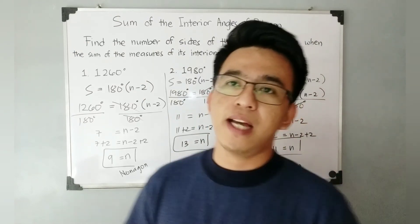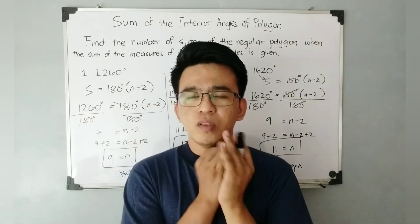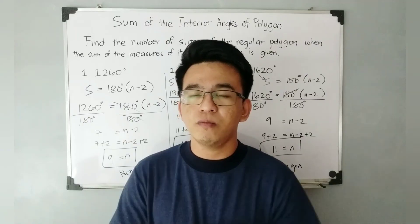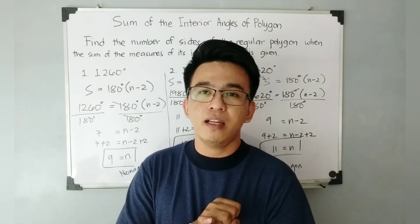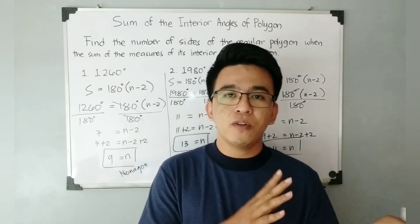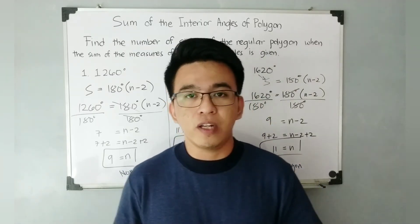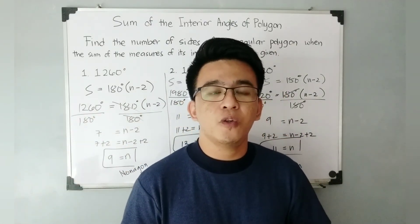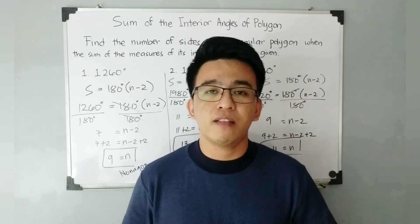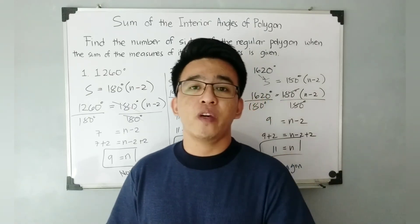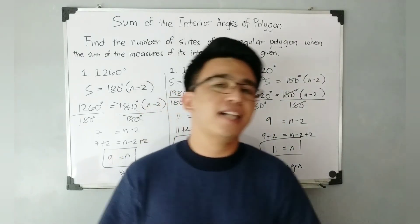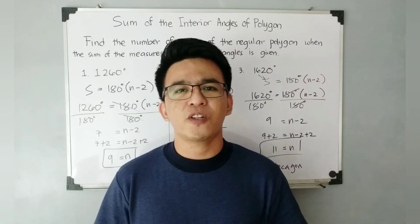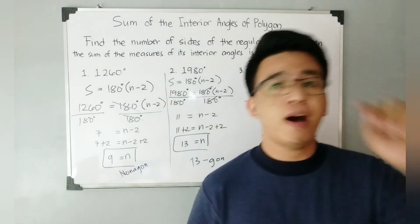I hope you learned the concept of the sum of the interior angles of a polygon. First, given the formula, we found the sum of the interior angles for a given polygon. Then we reversed the process: given the sum of the interior angles, we calculated the number of sides. If you're new to my channel, don't forget to like and subscribe and hit the bell button for updates on our latest uploads. Again, I am TeacherGon. Maraming maraming salamat. Bye!